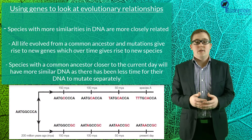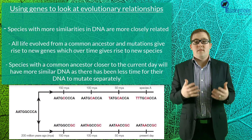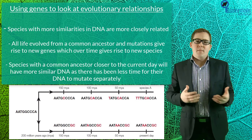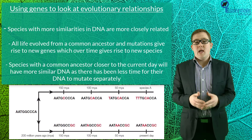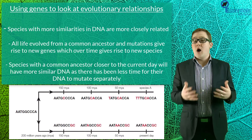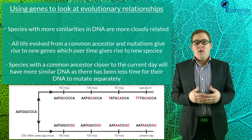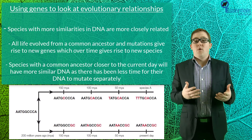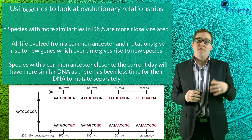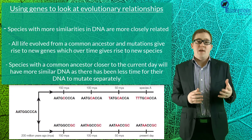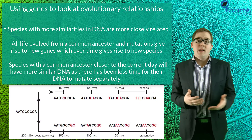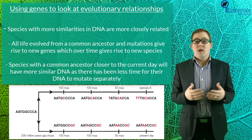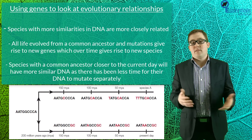Today we're talking about comparing genes between organisms and using that information to give us indications on which species are more closely related to each other. Species with more similar DNA are more closely related, and the reason for this comes back to the idea that all life on earth evolved from a common ancestor, and that over time small mutations which gave rise to an evolutionary advantage led to the development of new species, giving rise to the diversity of life we see today.